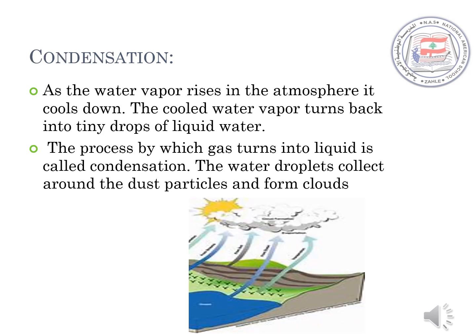After the first step of evaporation, we have a second step called condensation. As the water vapor rises in the atmosphere, it cools down. The cold water vapor turns back into tiny droplets of water. The process by which gas turns into liquid is called condensation. The water droplets collect around dust particles and form clouds.